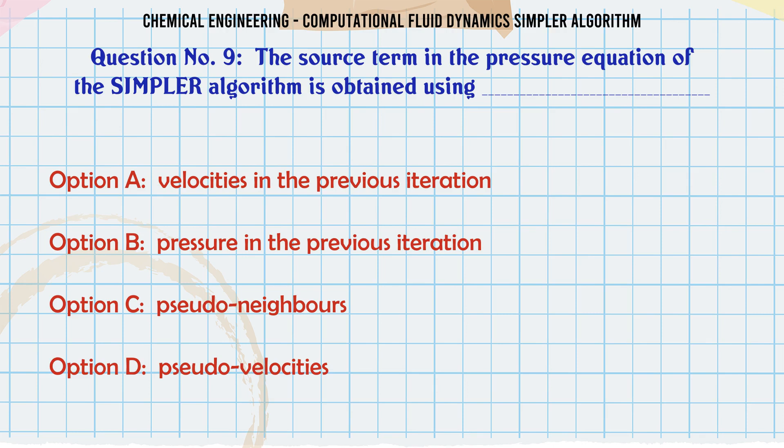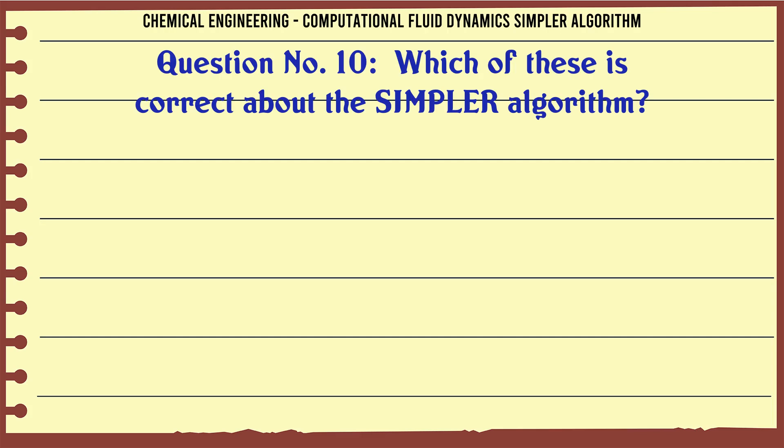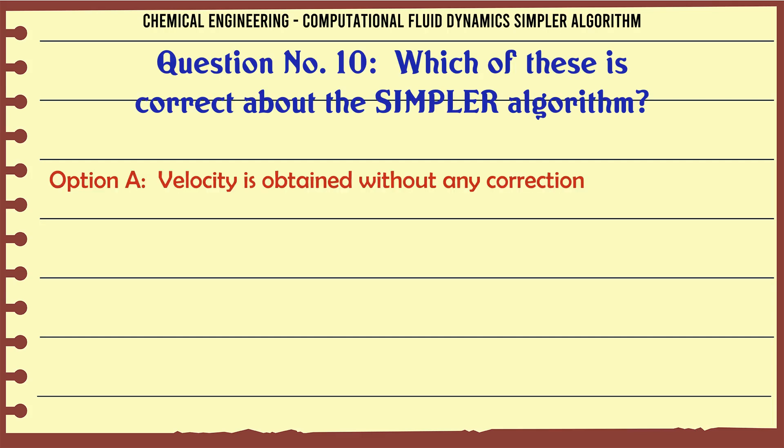The source term in the pressure equation of the SIMPLER algorithm is obtained using: A. Velocities in the previous iteration, B. Pressure in the previous iteration, C. Pseudo-neighbors, D. Pseudo-velocities. The correct answer is: Pseudo-velocities.